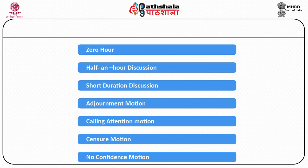A censure motion is different from a no-confidence motion. The censure motion must state the reason for its adoption in the Lok Sabha. It can be moved against an individual minister, a group of ministers, or the entire council of ministers, whereas a no-confidence motion can only be moved against the entire council. The censure motion is moved for censuring specific policies and actions, while no-confidence is to ascertain the Lok Sabha's confidence in the council. If a censure motion is passed, ministers need not resign; if a no-confidence motion passes, ministers must resign.